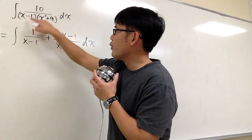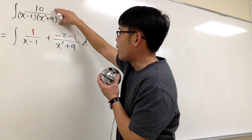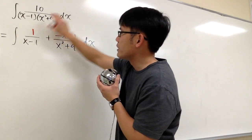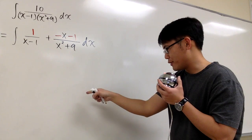Let's integrate 10 over x minus 1 times x squared plus 9. We have to do partial fraction. We have to go from here to here. And to do that, check out this video right here.